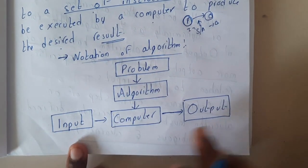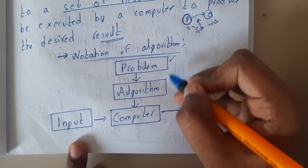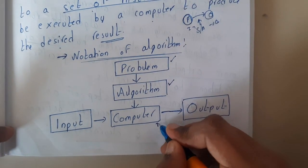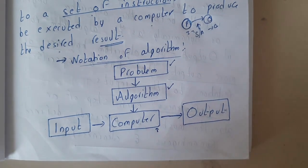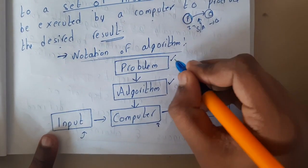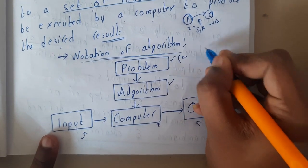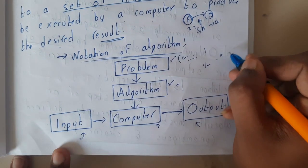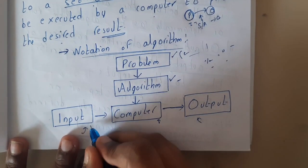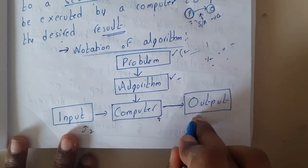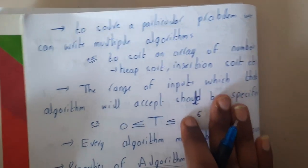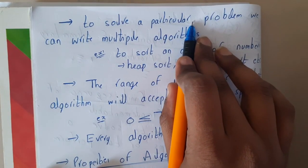To illustrate with a flowchart: initially you are given a problem, you write a solution, execute it in the computer, and based on the inputs it gives the output. For example, for an even and odd numbers program, if the number modulo two equals zero then it is even, else it is odd. So if you give input two, it will output even. That is nothing but an algorithm.